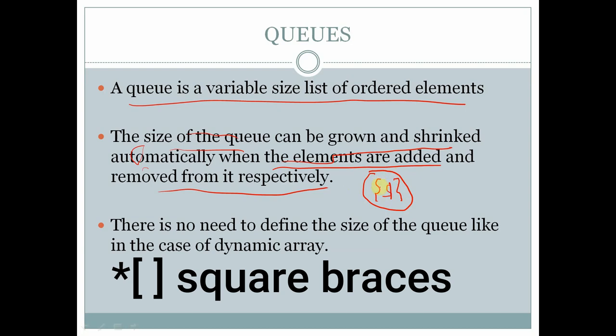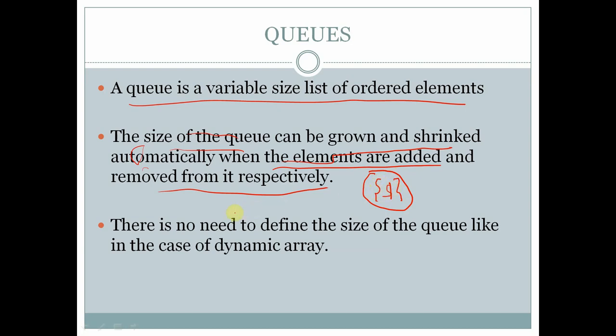Curly braces followed by dollar sign ($) represents a queue. There is no need to define the size of the queue, like in the case of a dynamic array.